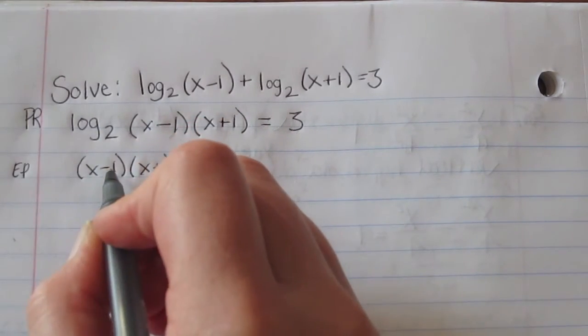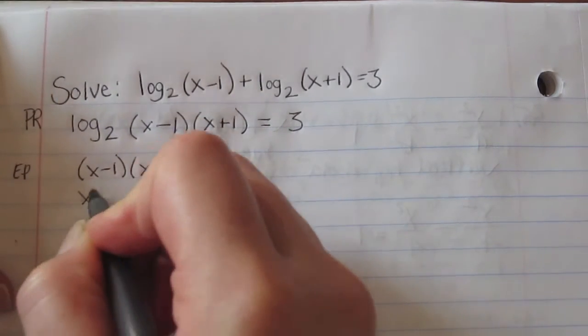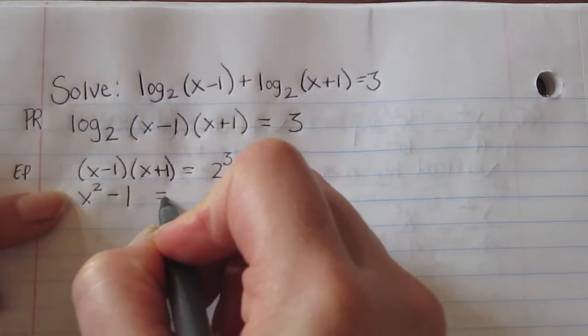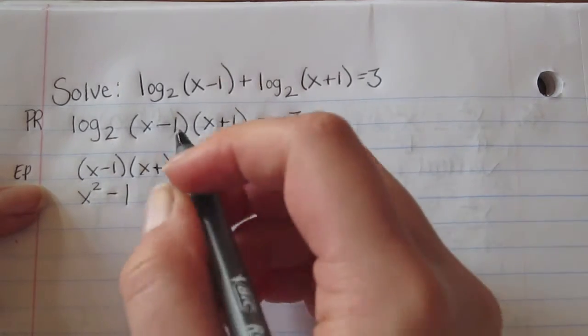We'll FOIL this out. So x squared minus 1 is going to equal 2 cubed, which is 8.